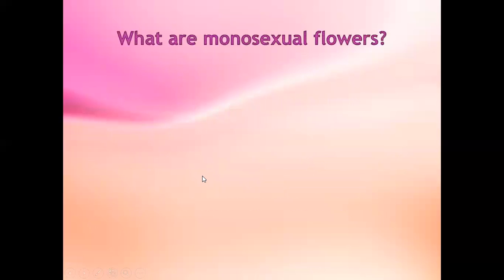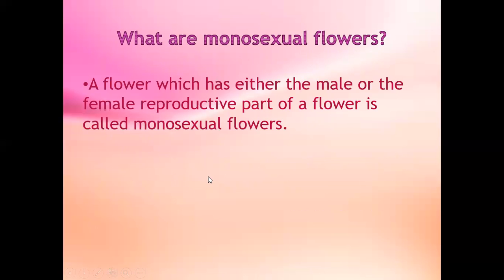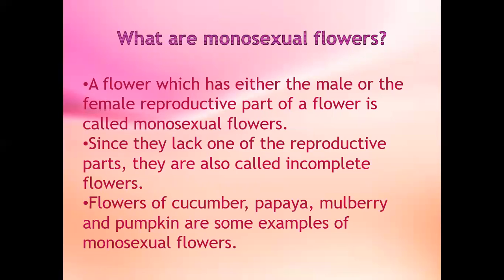What are monosexual flowers? A flower which has either the male or the female reproductive part is called a monosexual flower. Since they lack one of the reproductive parts, they are also called incomplete flowers. Flowers of cucumber, papaya, mulberry, and pumpkin are some examples of monosexual flowers.